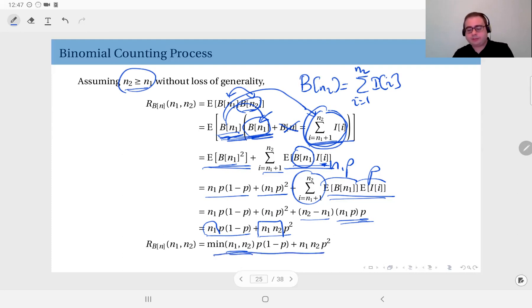And this is the general expression of the autocorrelation of the binomial counting process. As you see, it depends on n1 and n2 separately. The separation between them doesn't help me. Okay, I have to know n1 and n2. I have to have both their values.